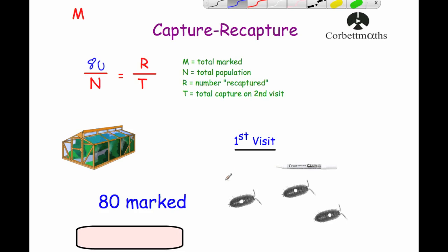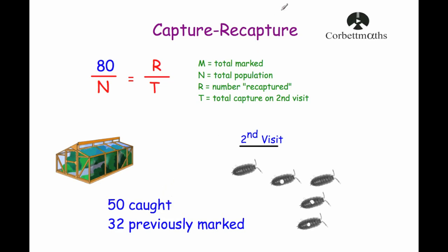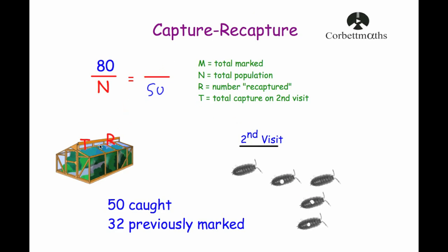We go back a day or two later — it needs to be soon because the white mark will disappear. We capture as many as we can; some of them will be marked, meaning we caught those previously, and some won't have the white mark. We've caught 50 on the second visit, so the total for the second visit T equals 50. Of those, 32 have the white dots on them, so recaptured R equals 32.